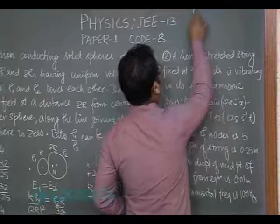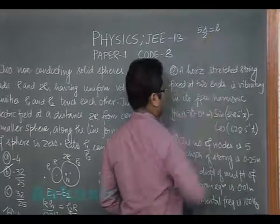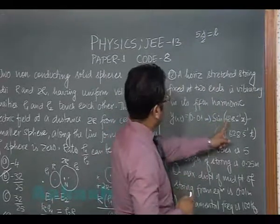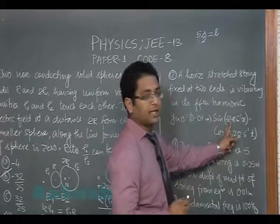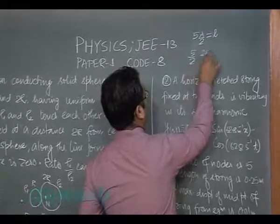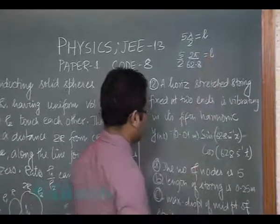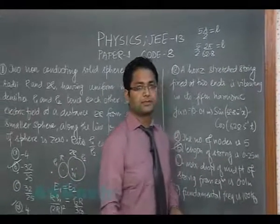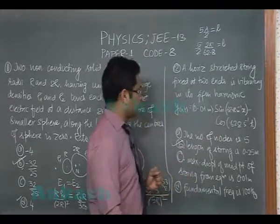You could also see that if it is in the fifth harmonic, 5 lambda by 2 would be equals to l. Now lambda can be brought from this data because sine kx, k has been given as 62.8, so that will be 5 by 2 into 2 pi by 62.8 equals to l. Putting that you would get length of the string is 0.25 meter. When the string is in the fifth harmonic quite obviously—